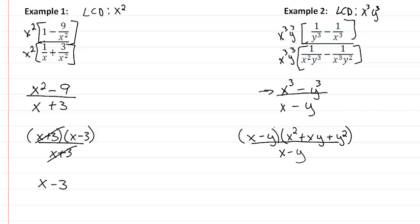x minus y is the common factor between the two, and that leaves us with x squared plus xy plus y squared, and we're done.